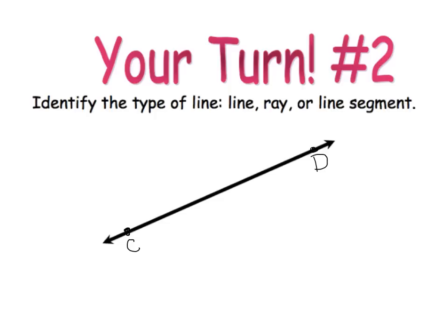Okay, here's number 2. Is this a line, a ray, or a line segment? Well, I see 2 arrows. So that tells me it is a line.